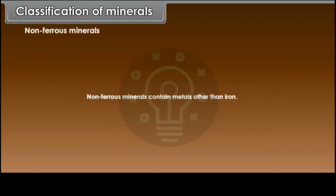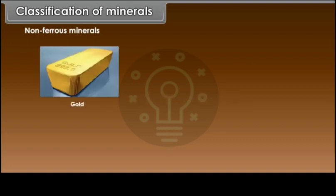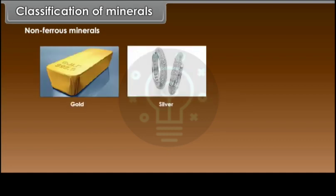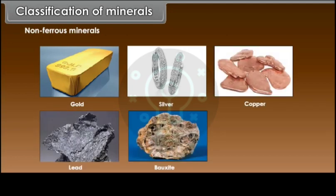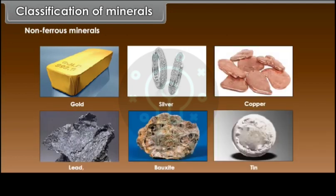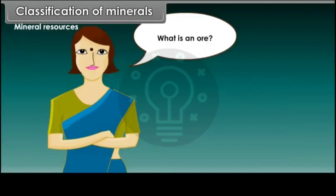Non-ferrous minerals contain metals other than iron. Examples include gold, silver, copper, lead, bauxite and tin. What is an ore?